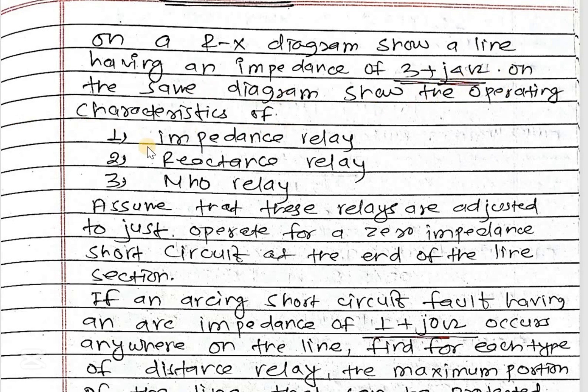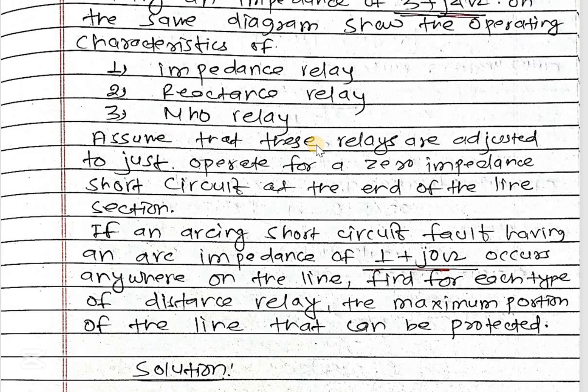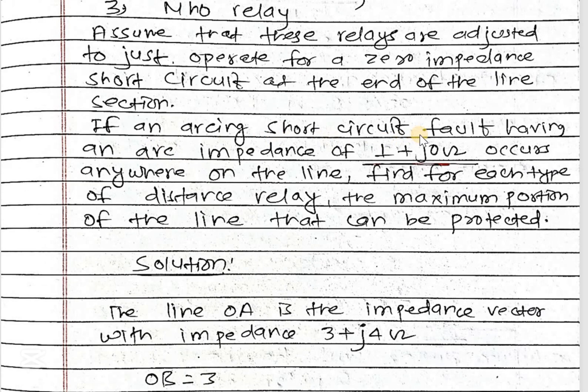Assuming that these relays are adjusted to just operate for a zero impedance short circuit at the end of the line section. If an arcing short circuit fault having an arc impedance of 1 plus j0 ohms occurs anywhere on the line...